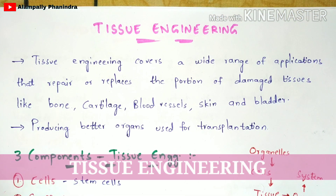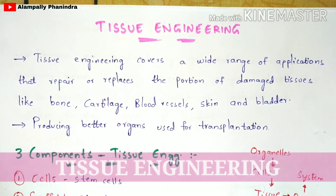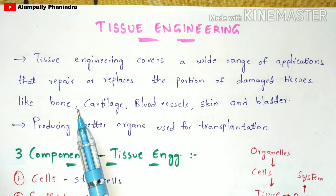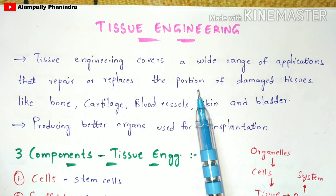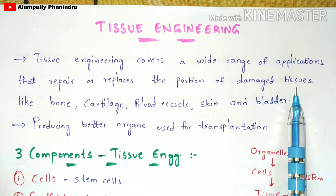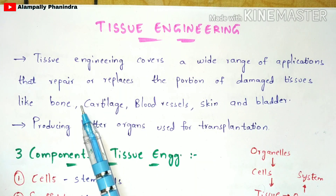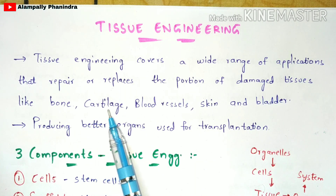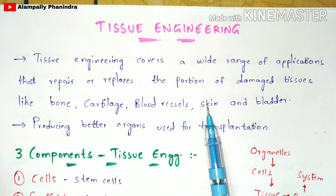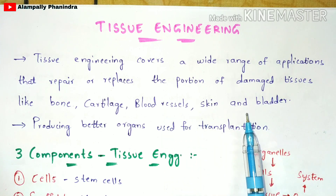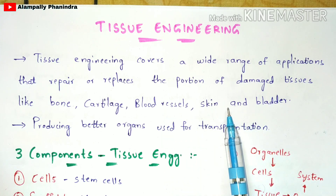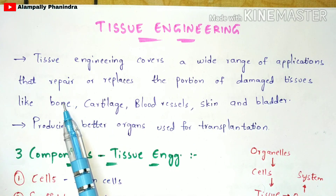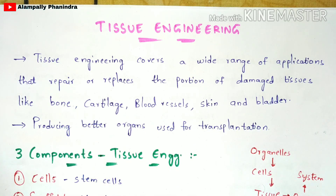Tissue engineering covers a wide range of applications that repair or replace portions of damaged tissues like bones, cartilage, blood vessels, skin, and bladder. In this video, I am going to explain it in the case of a bone.